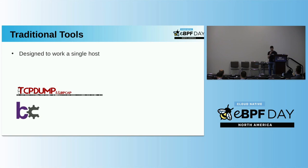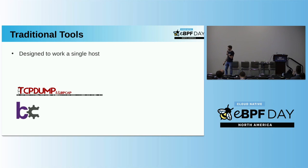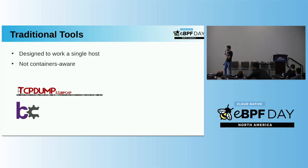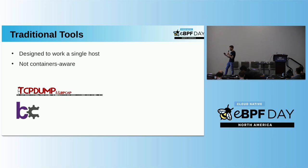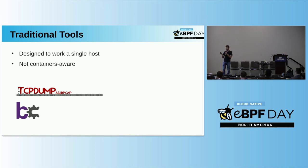There are some traditional tools — I call them traditional because they are designed to trace what is going on on a single node. When you have a process or a monolithic application, you can use those tools to understand what is going on. But those tools are designed to work in a single node, not in Kubernetes. One of the limitations is that they are not container-aware. You cannot easily filter what is going on in a given container using those tools — maybe you can filter by PID, but there is no easy way to understand what a given container is doing.